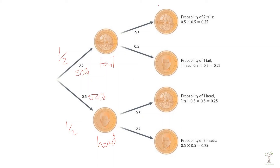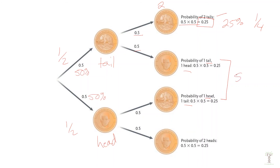If we flip the coin two times, each time there is a 50% chance of getting a head or a tail. What is the probability of getting two tails in a row? The first flip is 0.5, the second flip is 0.5 — you multiply those and you end up with 0.25, a 25% chance. So we have a 25% chance of getting two tails, a 50% chance of getting a tail and a head in any order, and a 25% chance of getting two heads.